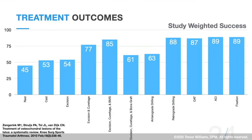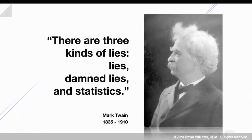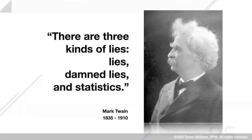Looking at treatment outcomes across the board: rest, cast, and excision have relatively poor outcomes — conservative treatment of symptomatic lesions fails about half the time. Excision with bone marrow stimulation achieves about 85% good outcome scores short-term. Retrograde drilling does well. Grafting performs well. Comparing biological grafts to osteochondral grafts, outcome scores are very similar, giving confidence that we are at least no worse off, while histologically we may be finding better outcomes as data accumulates.